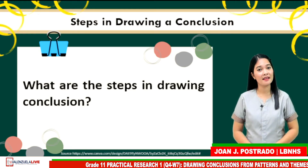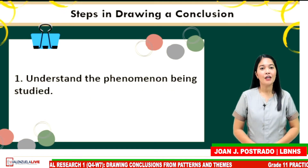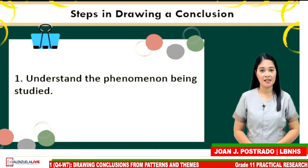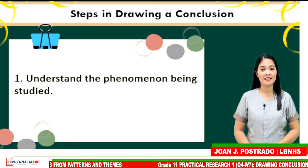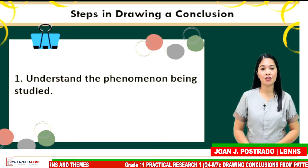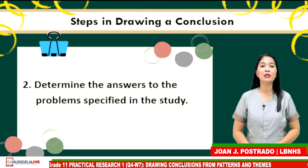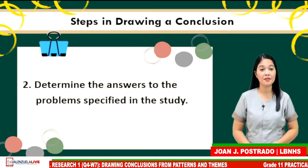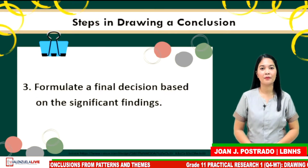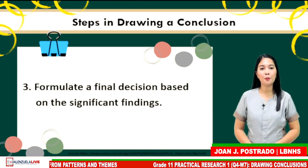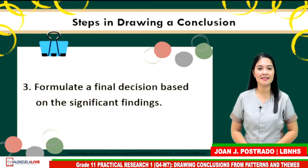You might be interested in identifying the steps in drawing a conclusion. Step 1: you need to understand the phenomenon being studied. Significantly, you have grasped your entire study. You must have a deep understanding of the starting point of your research problem so that you will know how to end it. The conclusion should appropriately answer the specific problems raised at the beginning of the investigation, anchored on the foreshadowed questions. Avoid merely repeating the results stated in the summary; instead, make inferences based upon the findings.